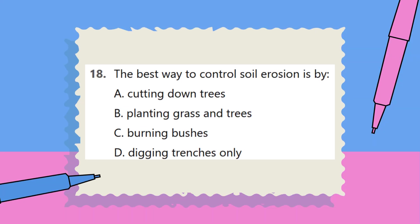Question 18. The best way to control soil erosion is by: A. Cutting down trees. B. Planting grass and trees. C. Burning bushes. D. Digging trenches only.